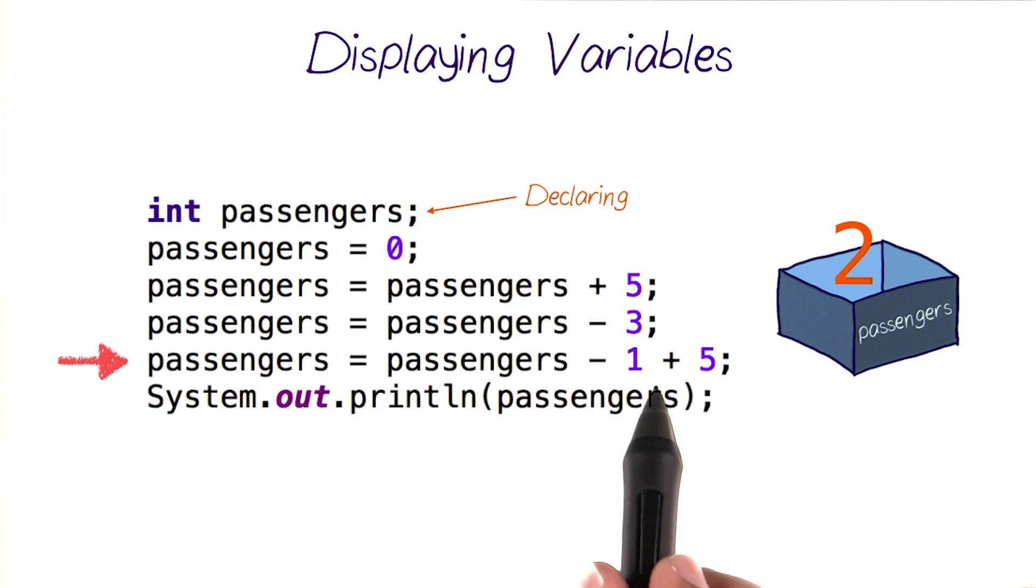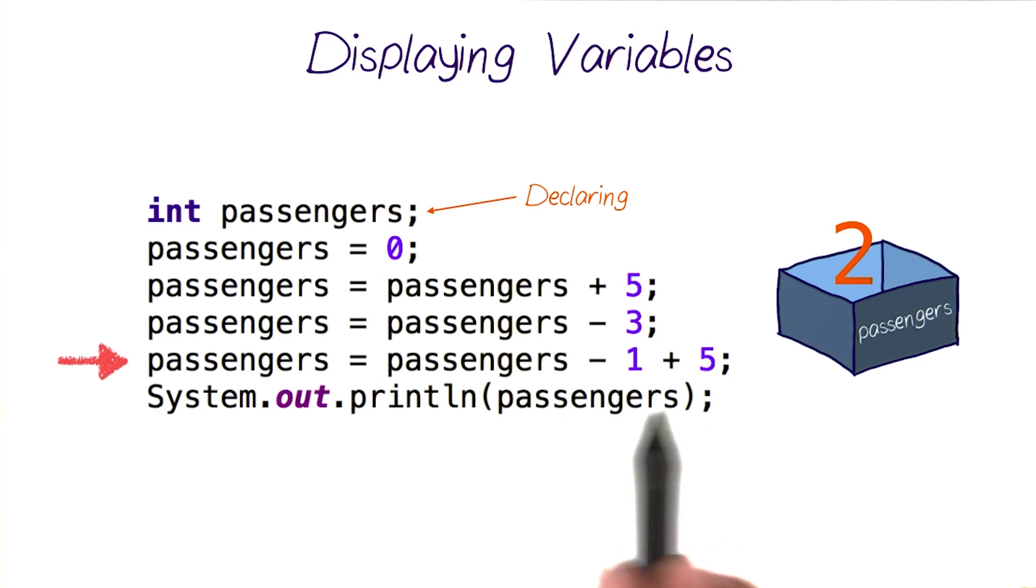And then finally, this statement here is subtracting 1 and adding 5 to the old value of passengers, which is 2 now. So when we subtract 1, it becomes 1, and then we add 5, passengers becomes 6.